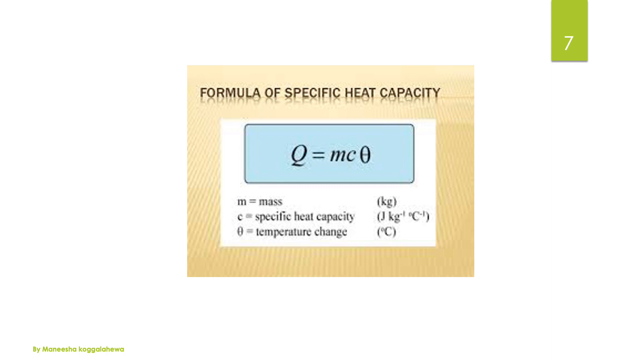In here, you can see the formula of specific heat capacity. The formula is Q equals m c theta. Q is the amount of heat energy, m is mass, c is specific heat capacity, and theta is the temperature change. That means final temperature minus initial temperature.